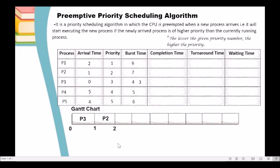At time 2, P1 arrives in the ready queue. We compare the priority of P1 and P2. The priority of P1 is 1, the priority of P2 is 2 — P1 has higher priority. So we allocate the CPU to P1. The remaining burst time of P2 is now 6. P1 will execute until the next arrival time, which is 4. So P1 will execute until time 4.